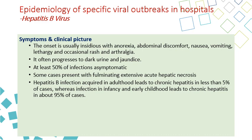The patient progresses to dark urine and jaundice, which is yellowish discoloration of the eye and, in severe cases, the skin. About 50% of cases are asymptomatic. Some cases can develop fulminating extensive acute hepatic necrosis, which could be fatal. Hepatitis B can become chronic in 5% of adult cases, but in 95% of cases that develop in infancy and early childhood.